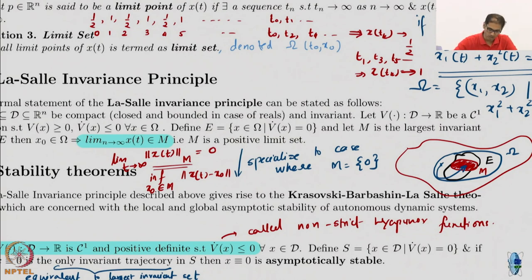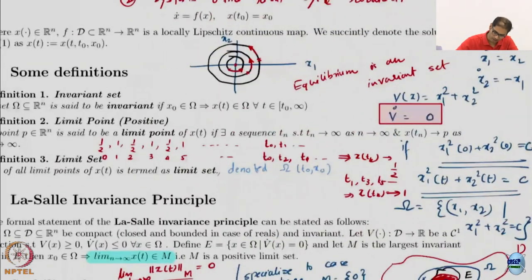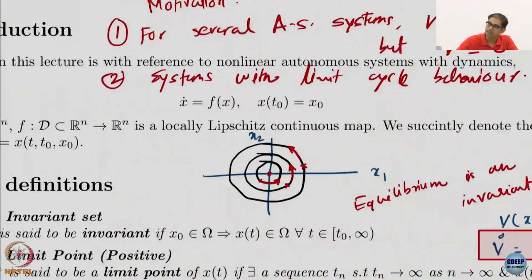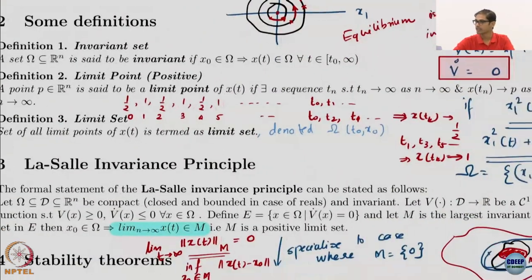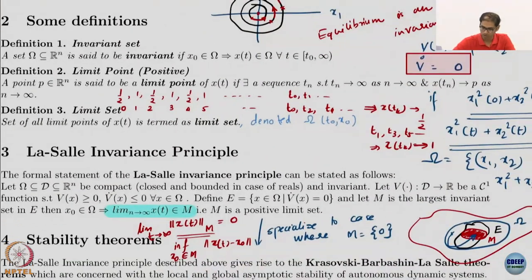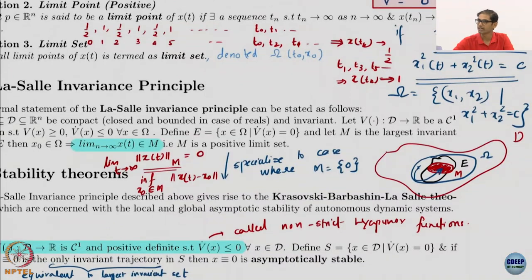I hope that is obvious. You cannot make an arbitrary set inside an invariant set and say that is also invariant. For example, in this circle, I cannot say that this is invariant, this piece. I cannot say this piece is invariant, obviously, because I could be moving around in that circle, I will get out of the set very easily. So just because I have an invariant set does not mean every piece of that invariant set is an invariant set.